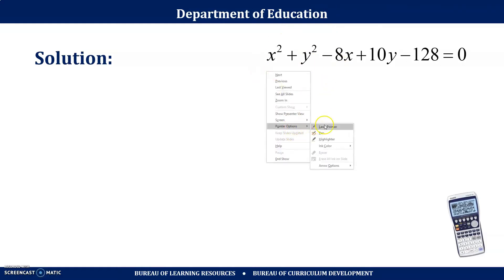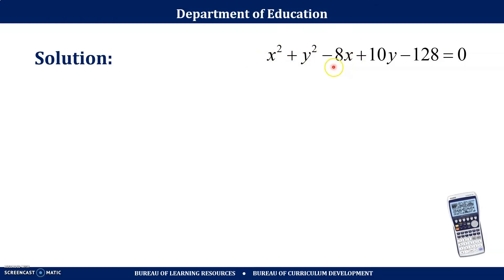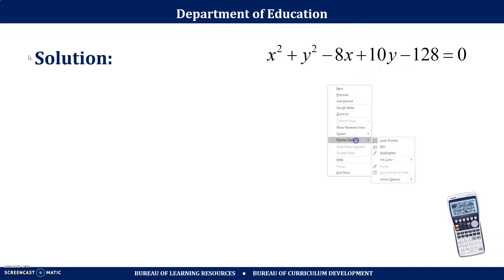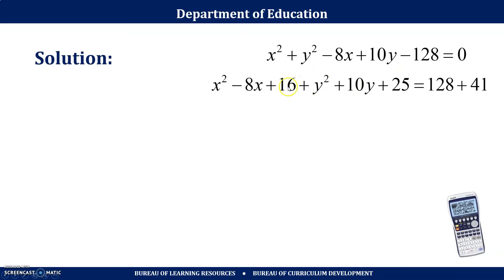Completing the square: for x² − 8x I have to add 16 on the left side, and for y² + 10y I have to add 25. So I'm adding 41 on the left side, and to maintain equality I have to add 41 also on the right side. Of course I also transpose −128 to the right side.